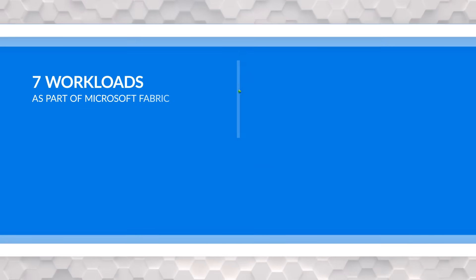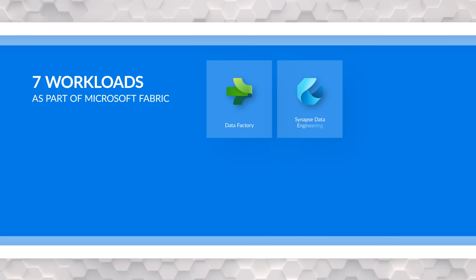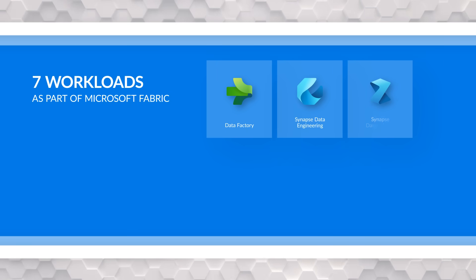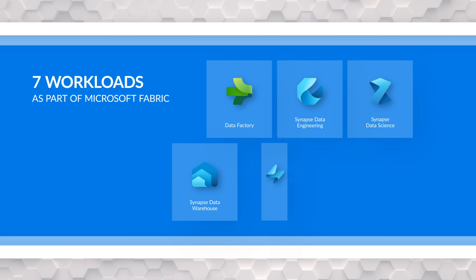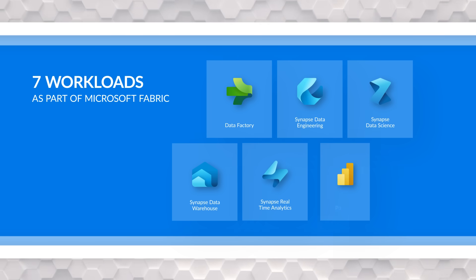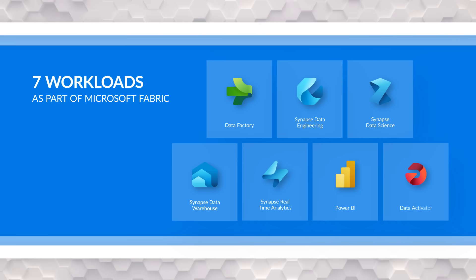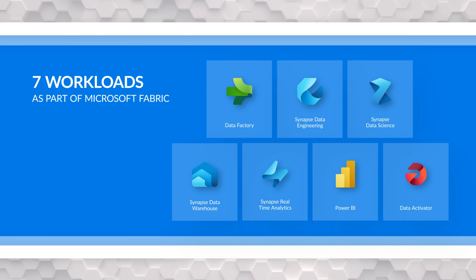There are seven workloads defined as part of Microsoft Fabric: Data Factory, Synapse Data Engineering, Synapse Data Science, Synapse Data Warehouse, Synapse Real-Time Analytics, Power BI, and the new Data Activator — which wasn't available at the time of this recording, but it will be coming to Microsoft Fabric soon. It was demoed at the Microsoft Build conference where this was all announced.